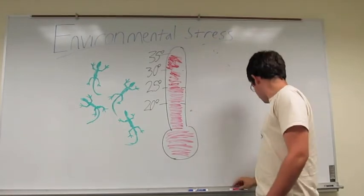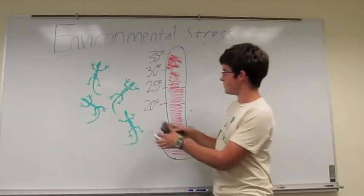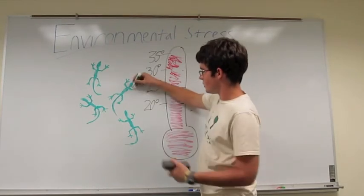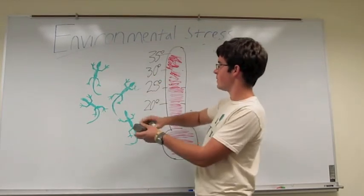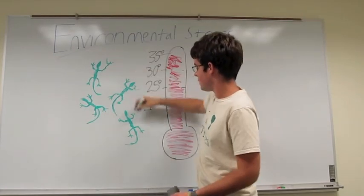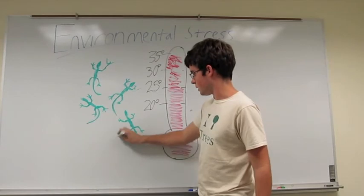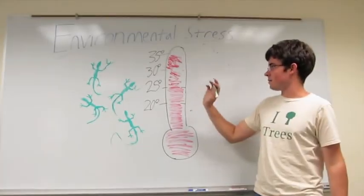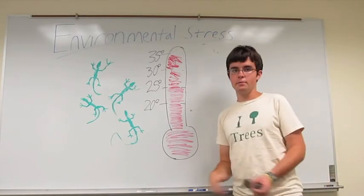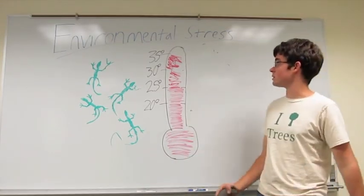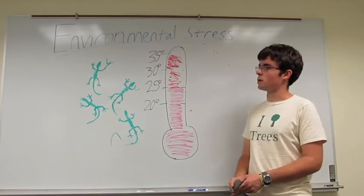you would start to see changes in the lizards. Let's say a limb might be a little shorter on this one, longer on this one, and a mutant tail on this guy. So, the symmetry of these lizards is affected when they're developing at an abnormal temperature, and that is one example of environmental stress.